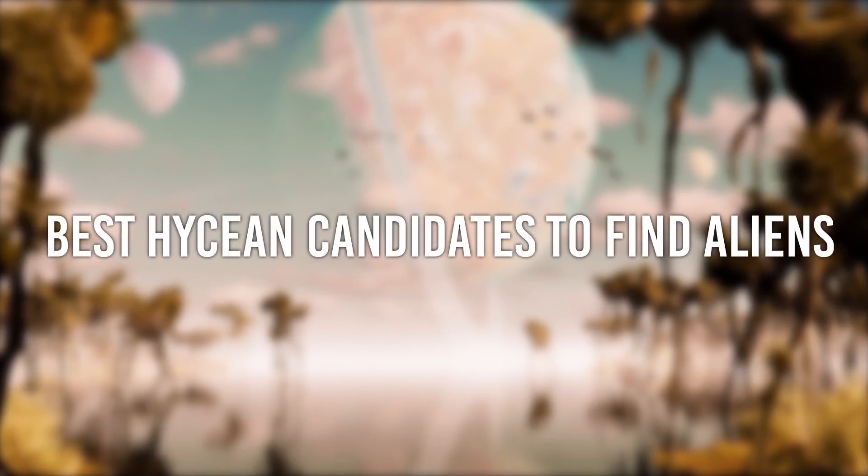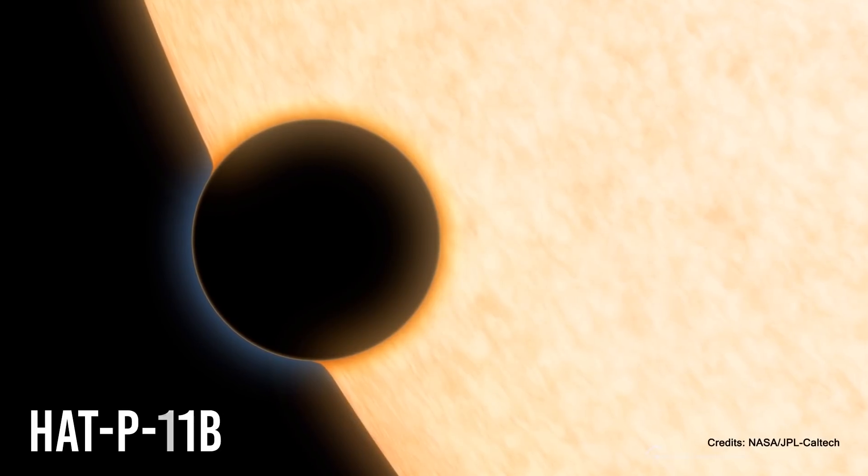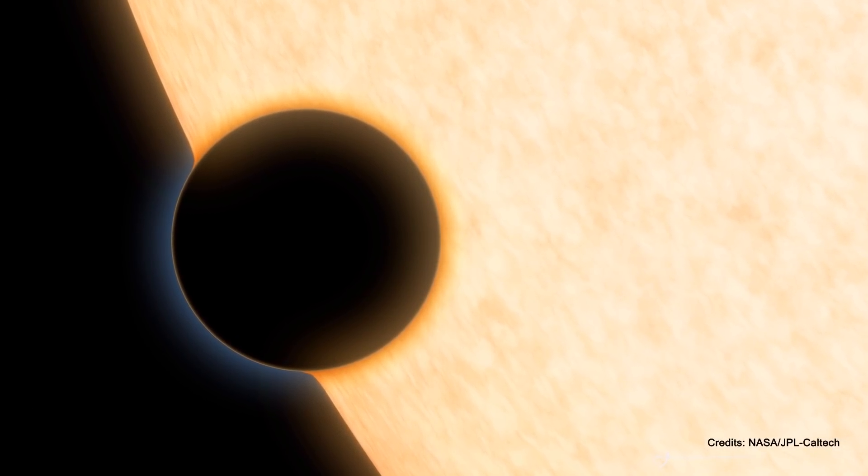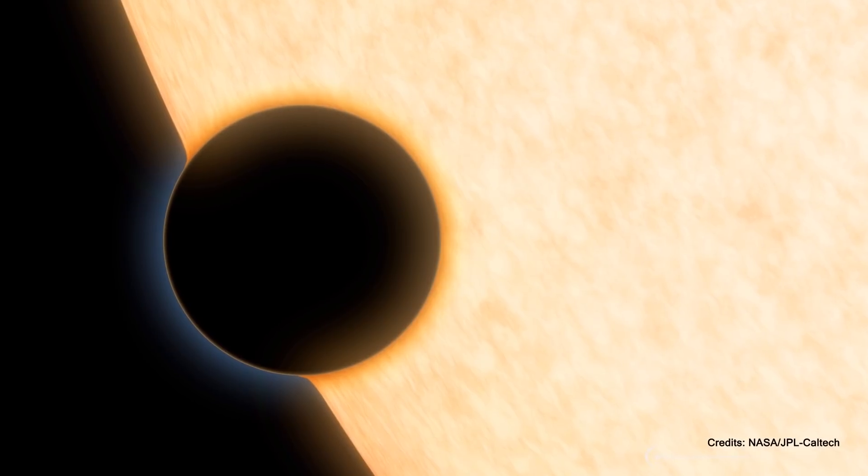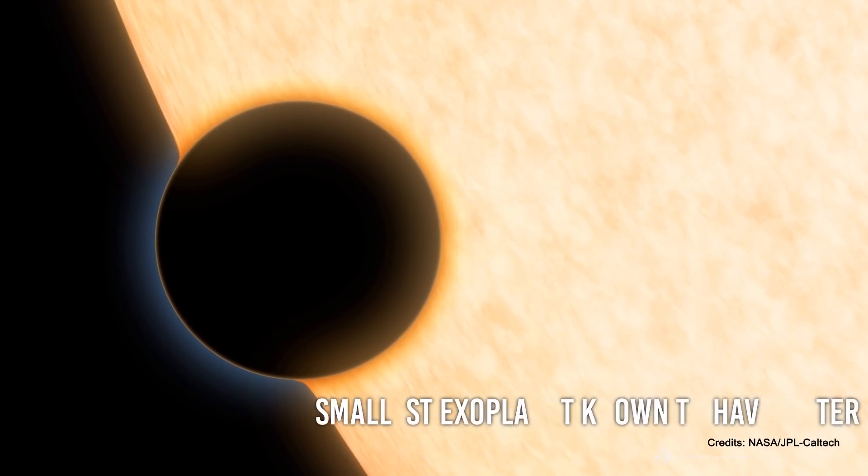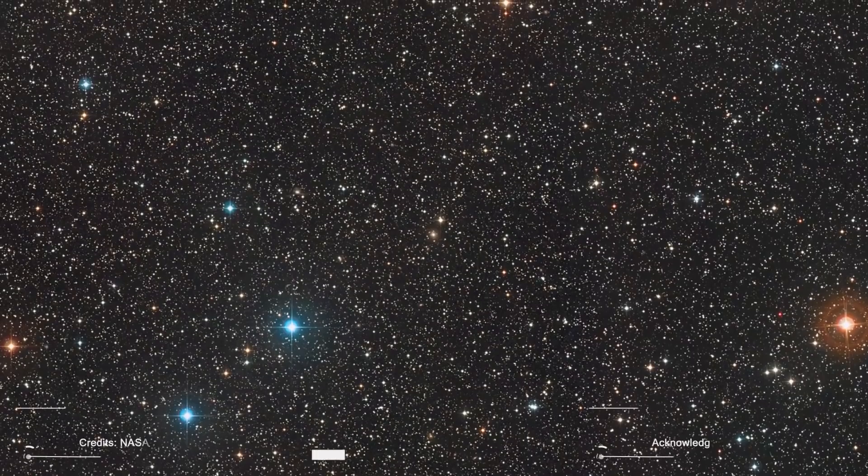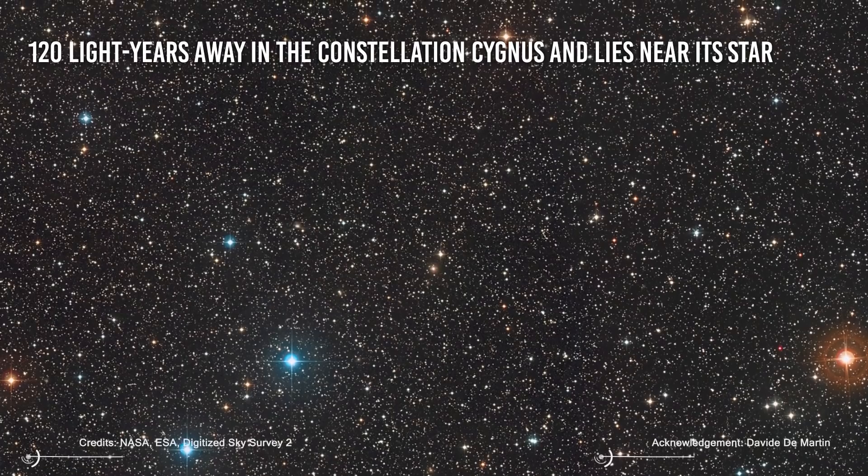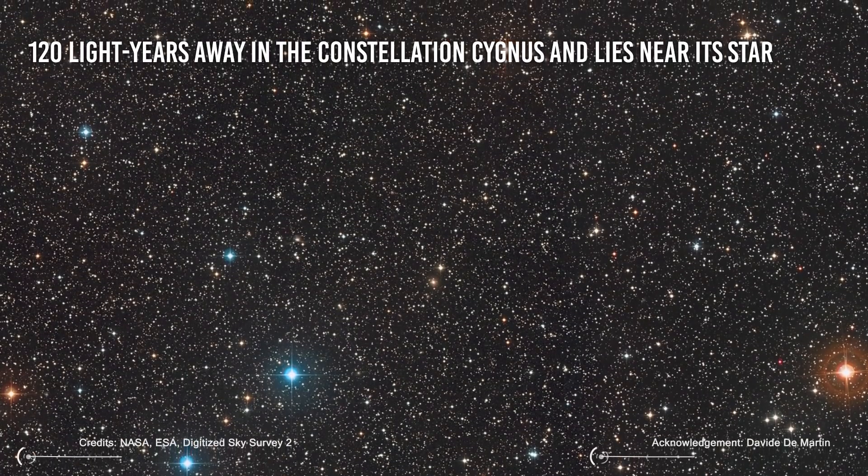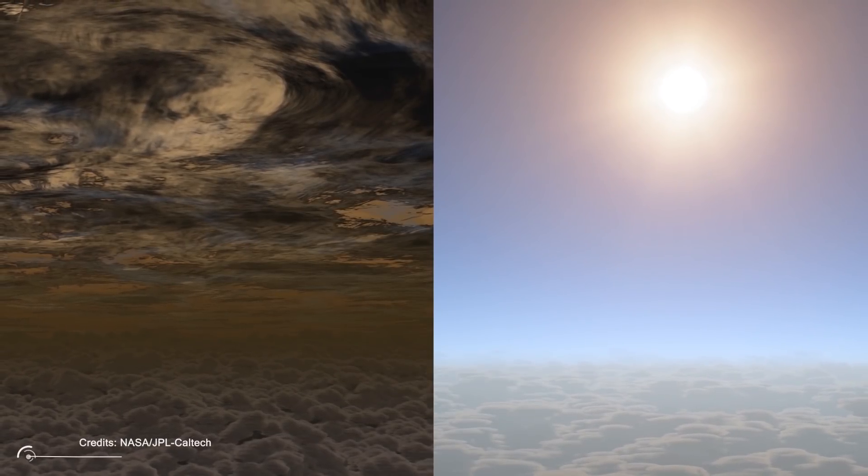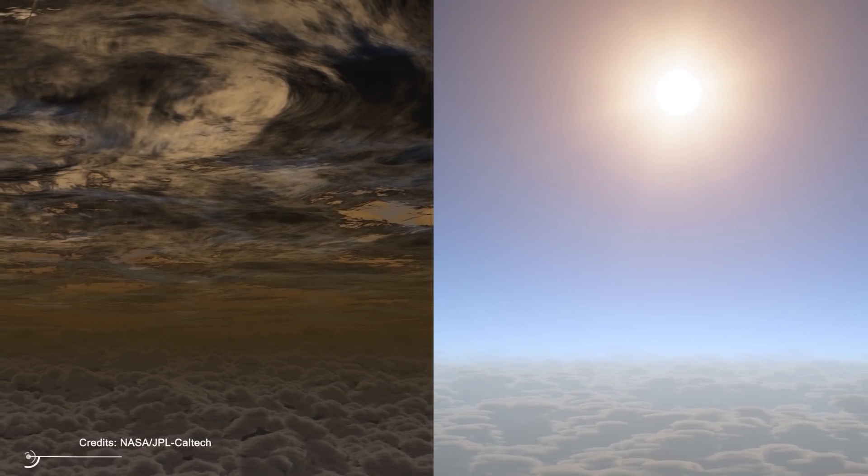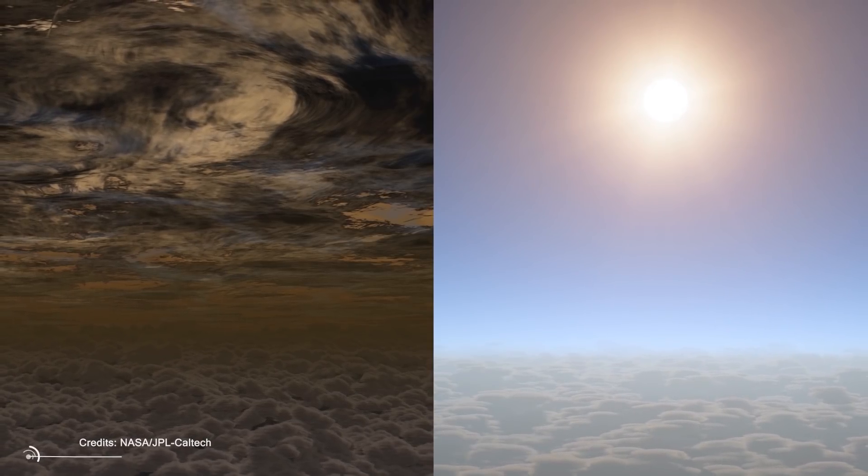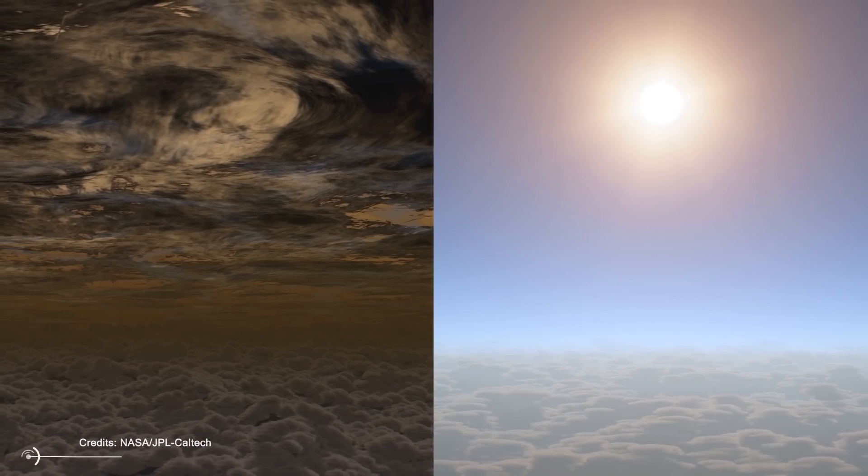Best Hycian Candidates to Find Aliens. HAT P11b. One of the most promising candidates to find signs of extraterrestrial life is the exoplanet HAT P11b. It is the smallest exoplanet known to have water. HAT P11b is located 120 light-years away in the constellation Cygnus and lies near its star in a five-day orbit. This world is likely too warm for oceans, but it has water vapor and clear cloudless skies.